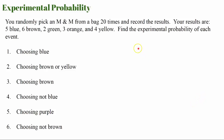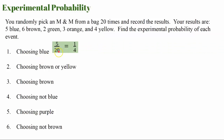Experimental probability. You randomly pick an M&M from a bag 20 times and record the results — that's your experiment. Your results are: five blue, six brown, two green, three orange, and four yellow. You'll have six different tasks to find the experimental probability from your experiment's data. Choosing blue: five out of 20, which simplifies to one out of four. So your experimental probability of choosing blue is one-fourth of the time.